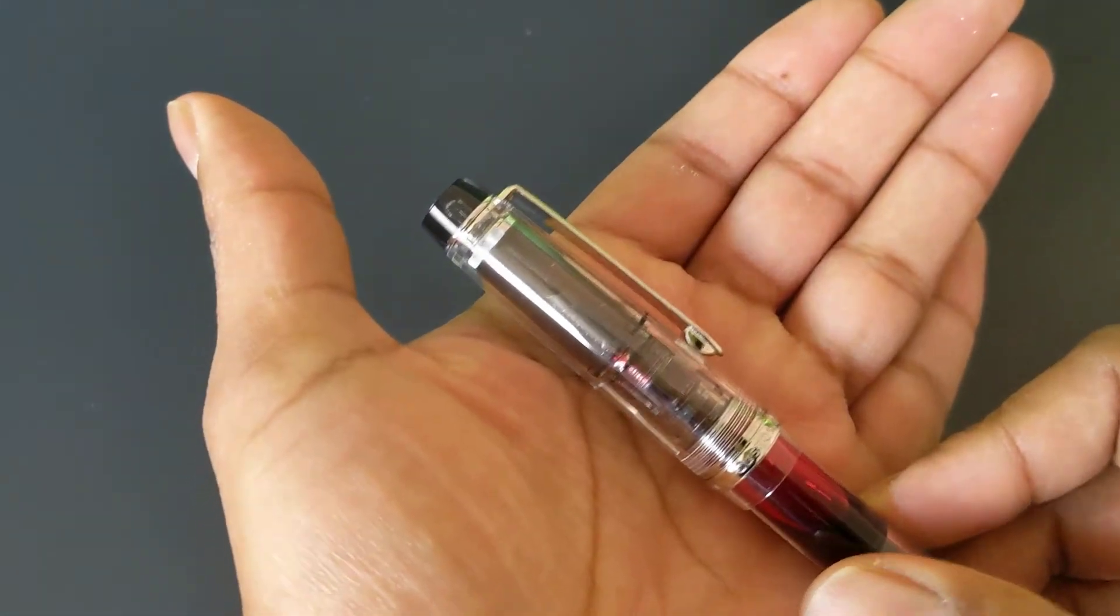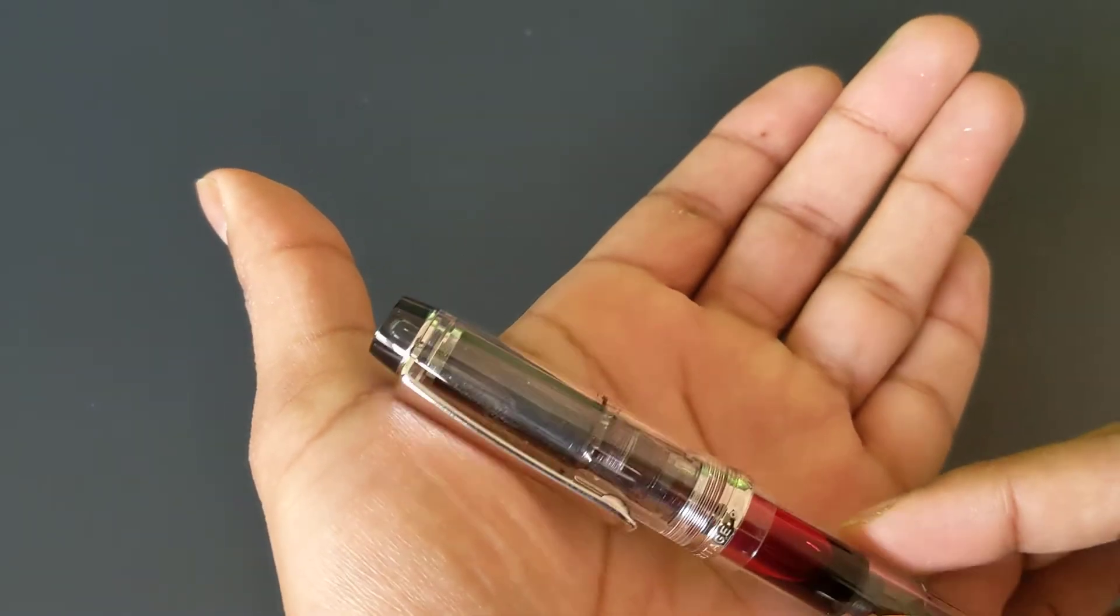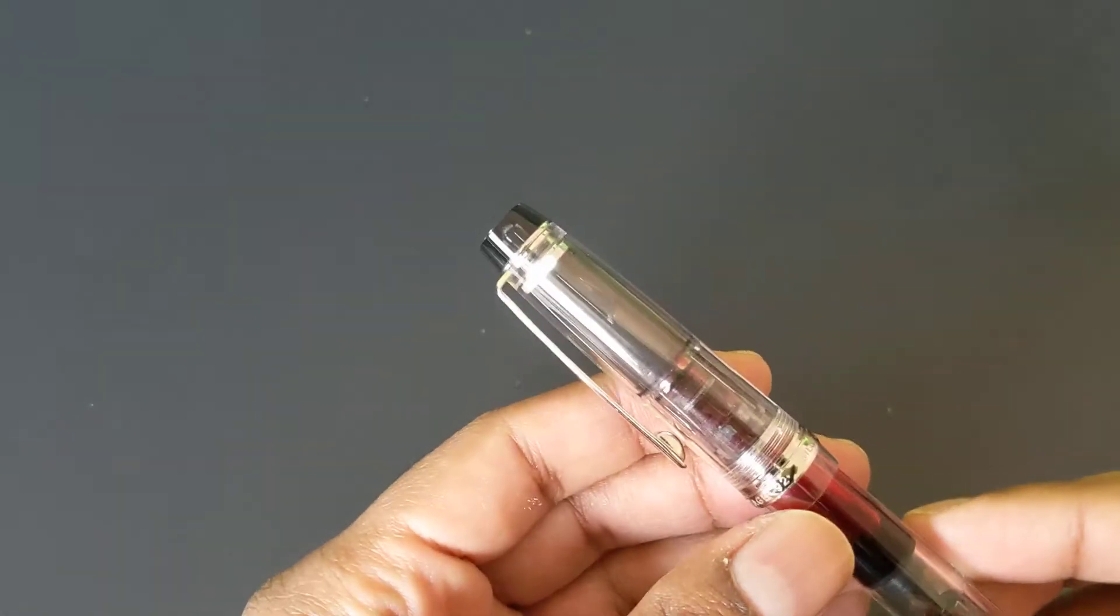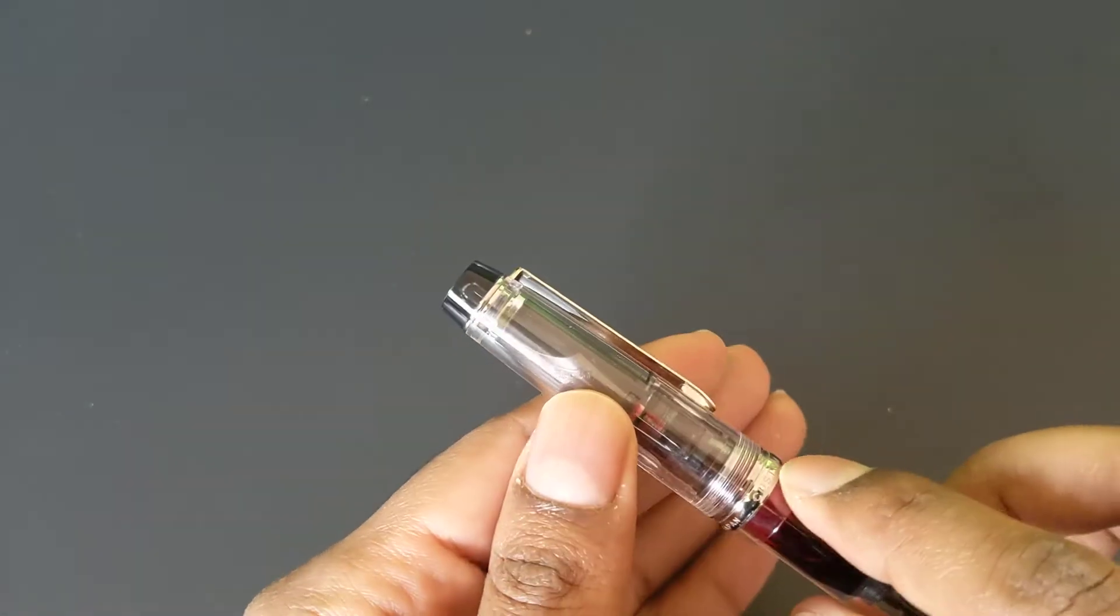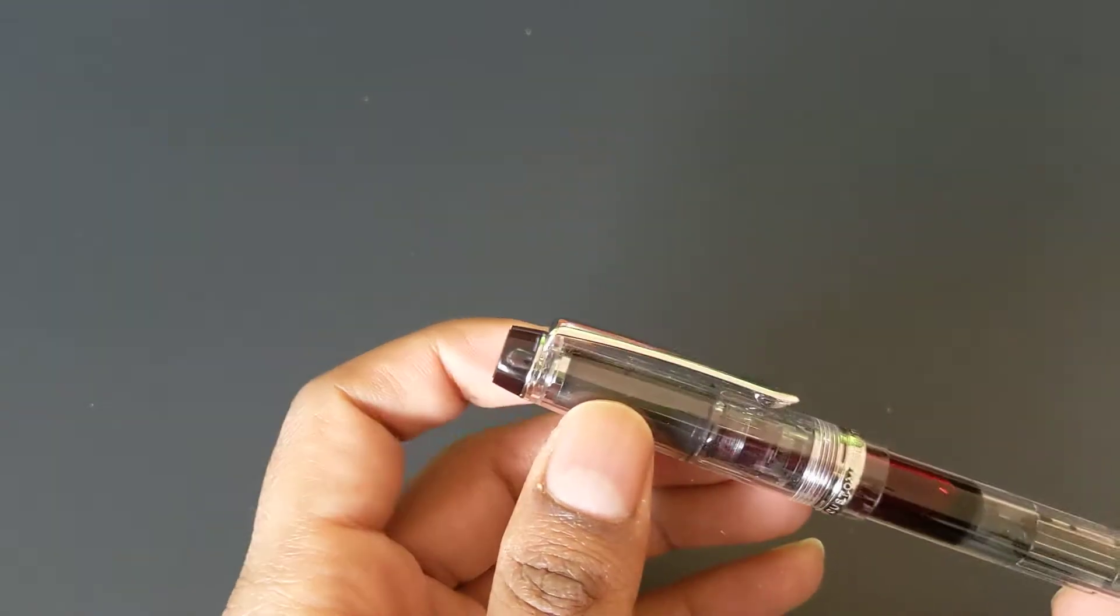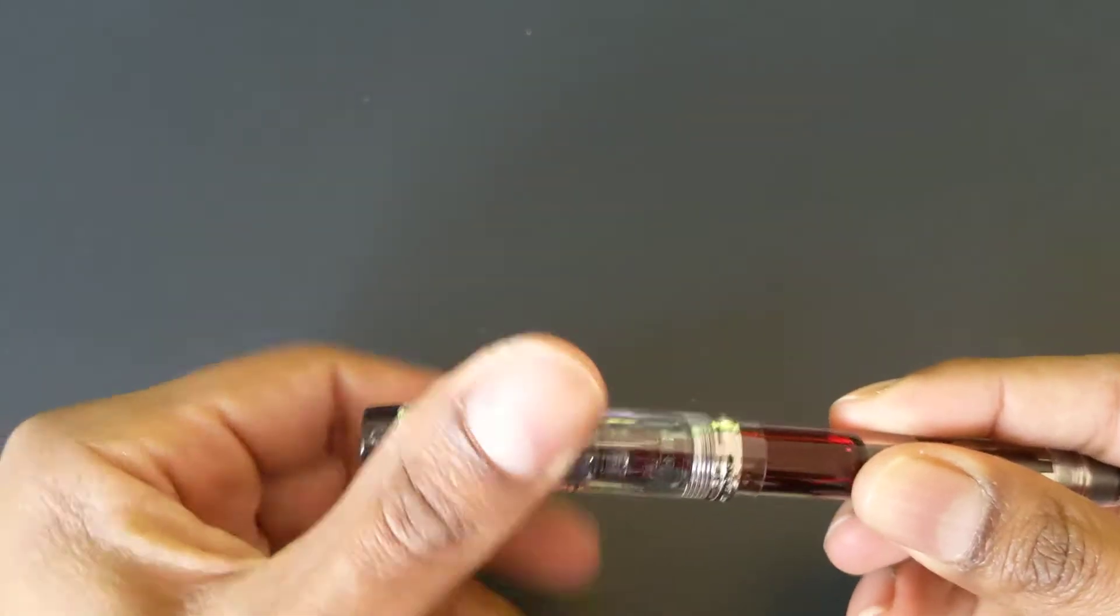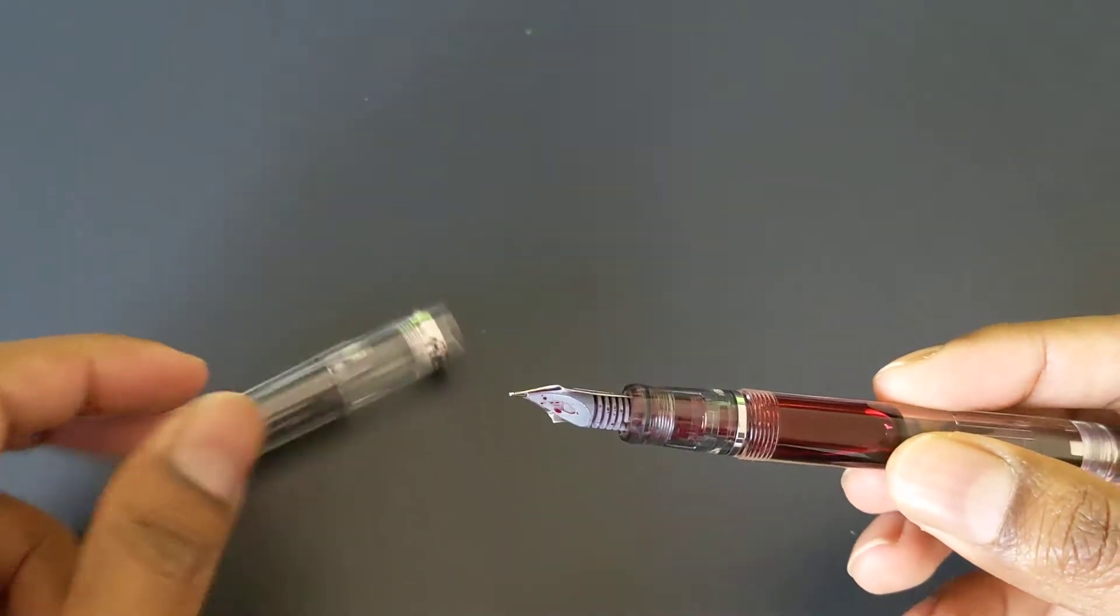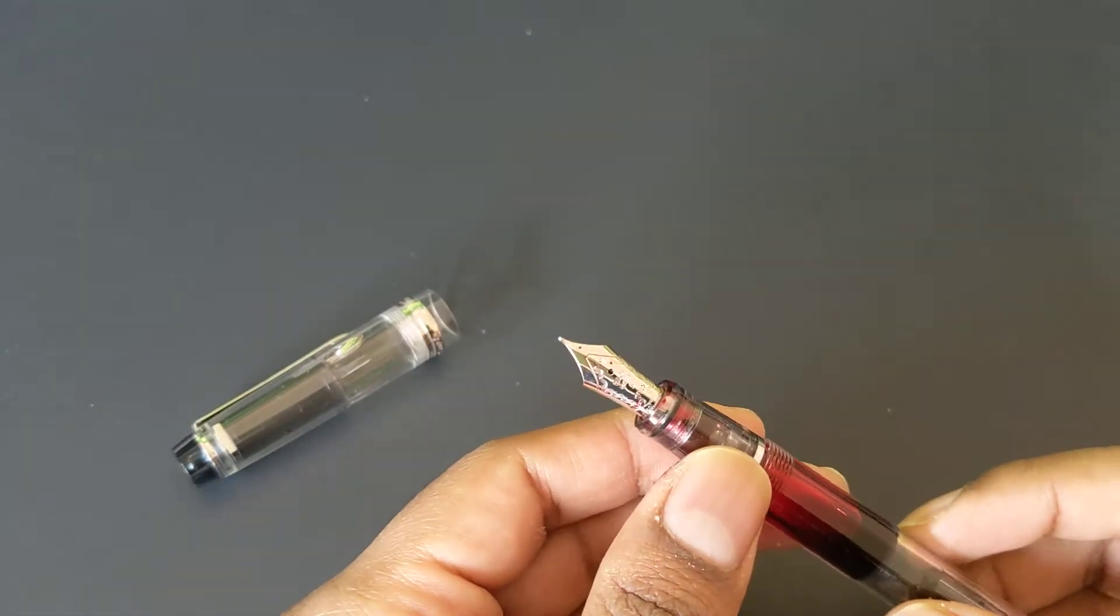The cap of the pen says Custom Heritage 92, Pilot Japan on it. A lot of the other custom series pens have a star on each side of the cap band, this one does not. The cap unscrews with one and a half turns, which is common of Pilot twist cap pens.